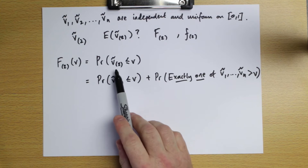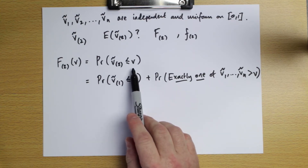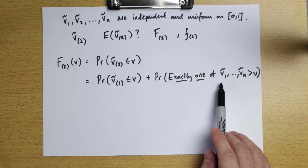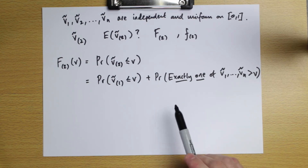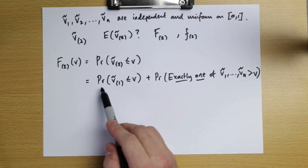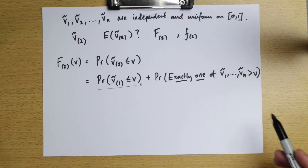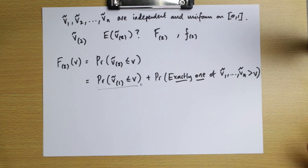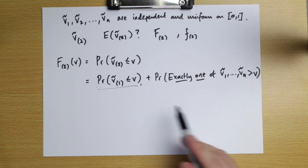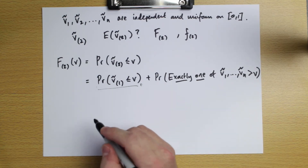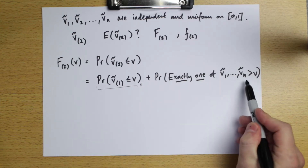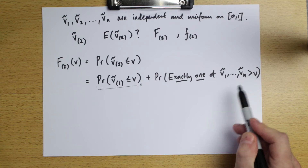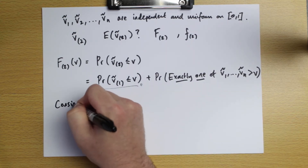So these are the two ways in which the second order statistic could be less than any particular value v: either all values are less than v, or exactly one — the highest — is above v and everything else is less than or equal to v. The first case is just the first order statistic's distribution function. Now we need to analyze the second case.